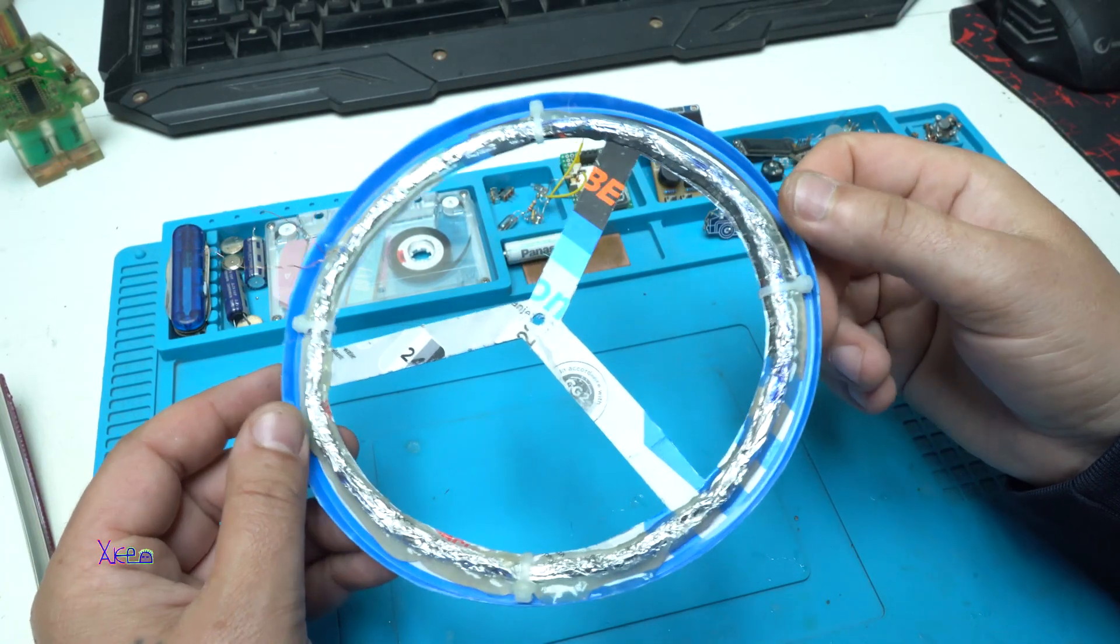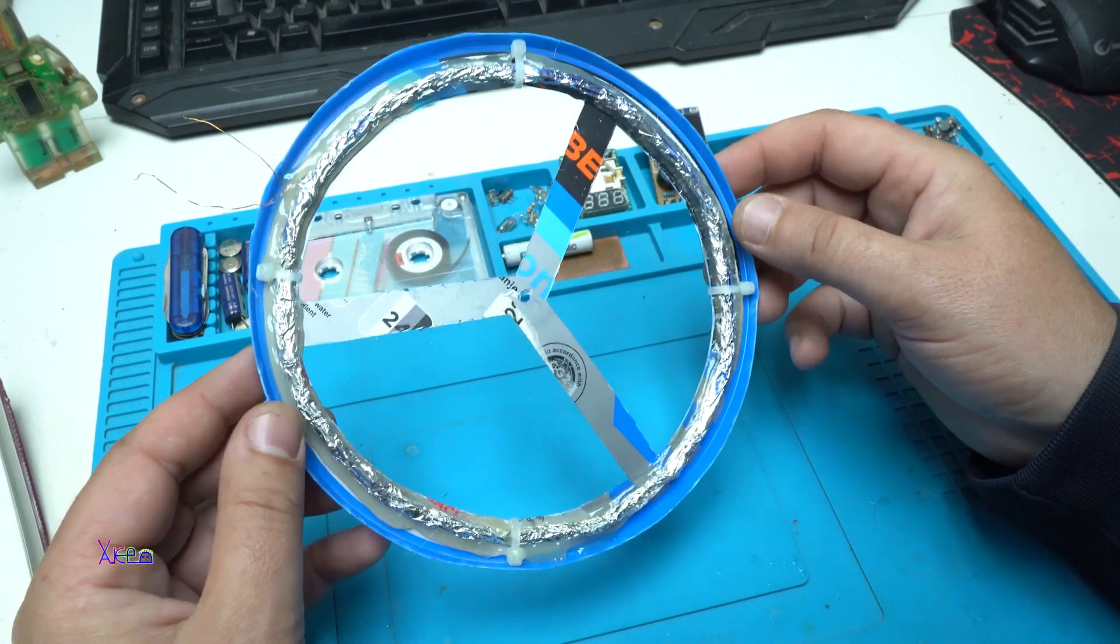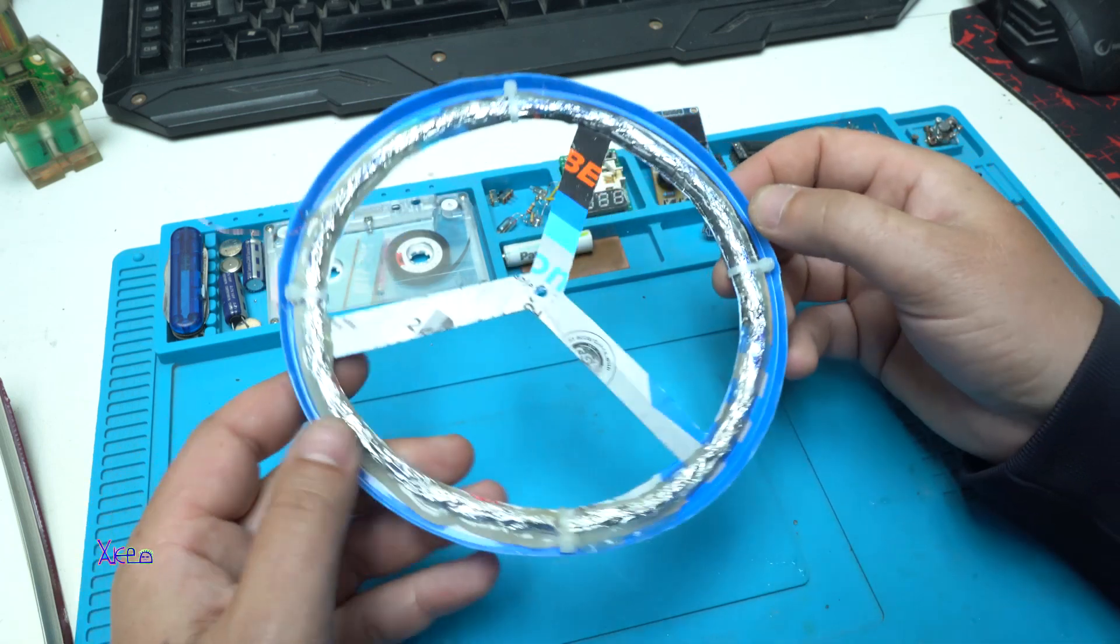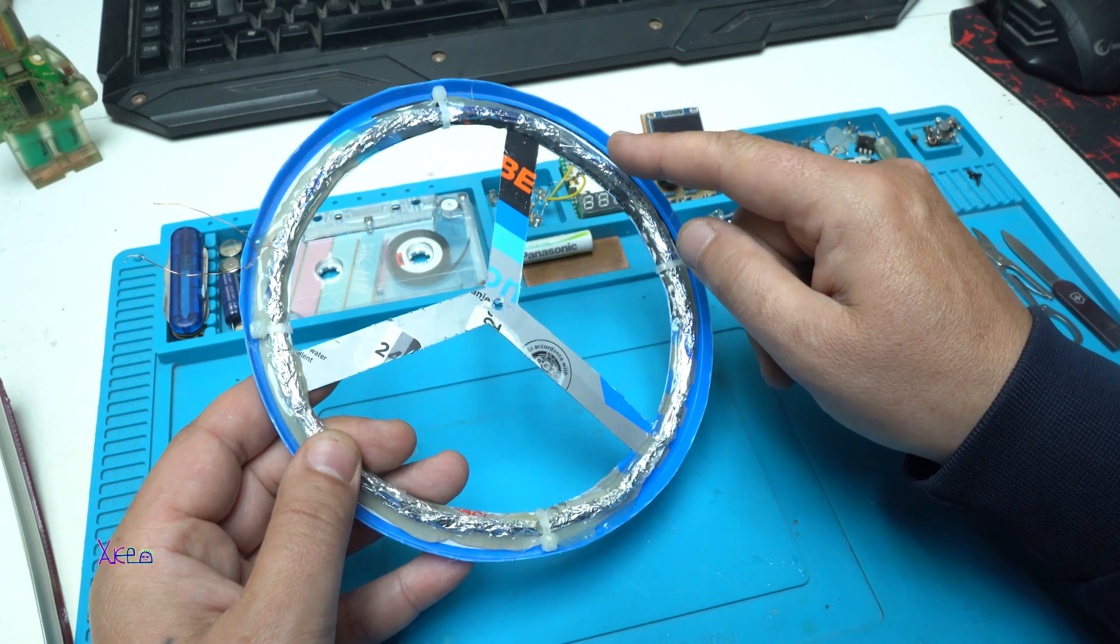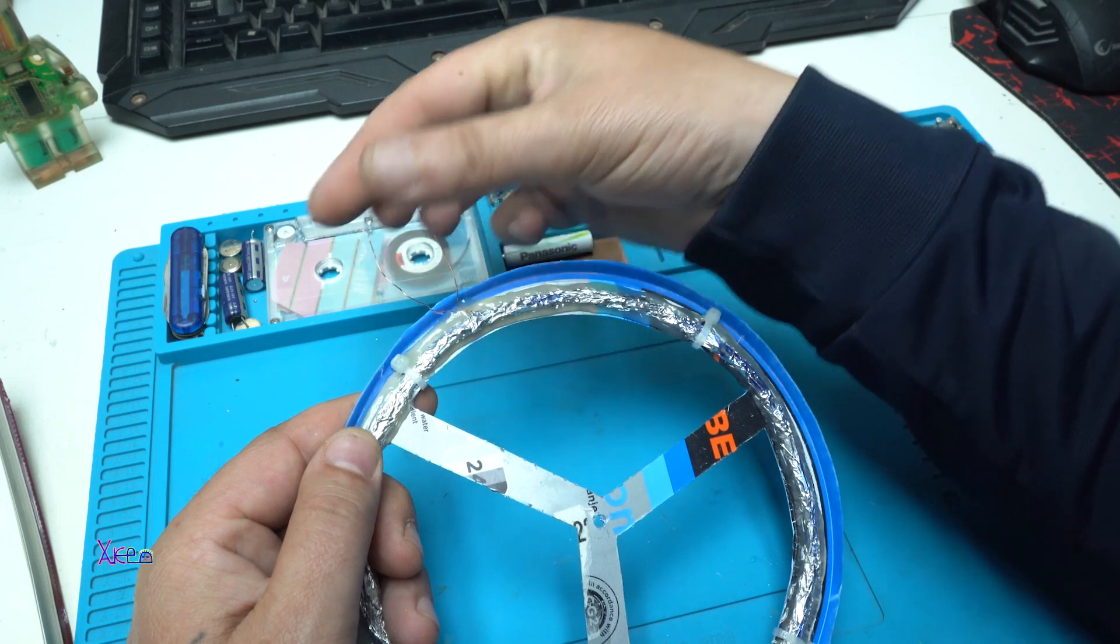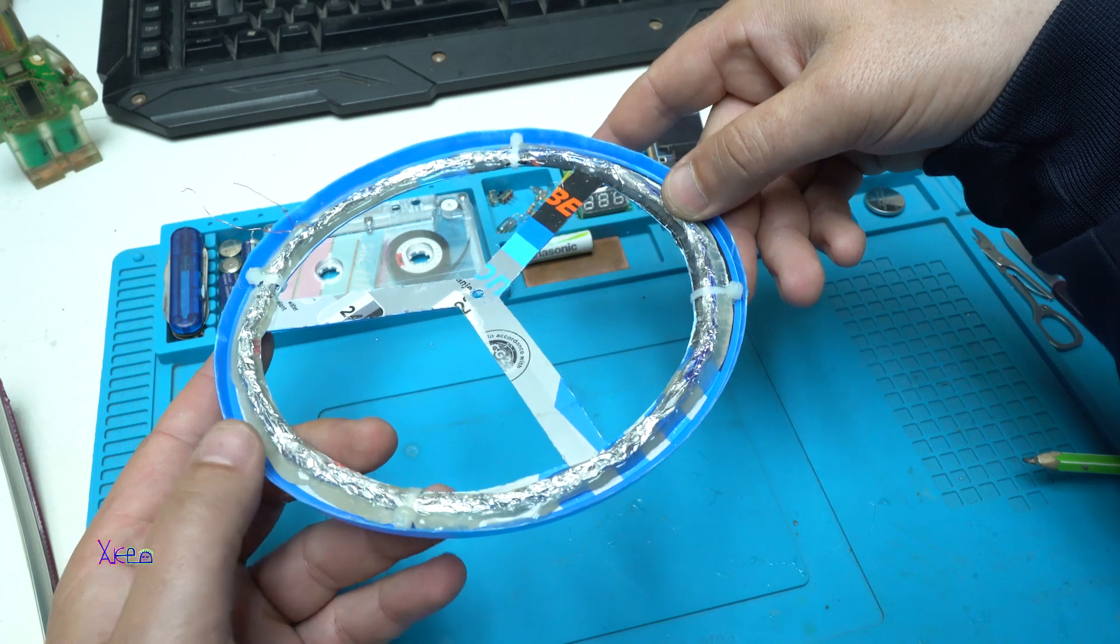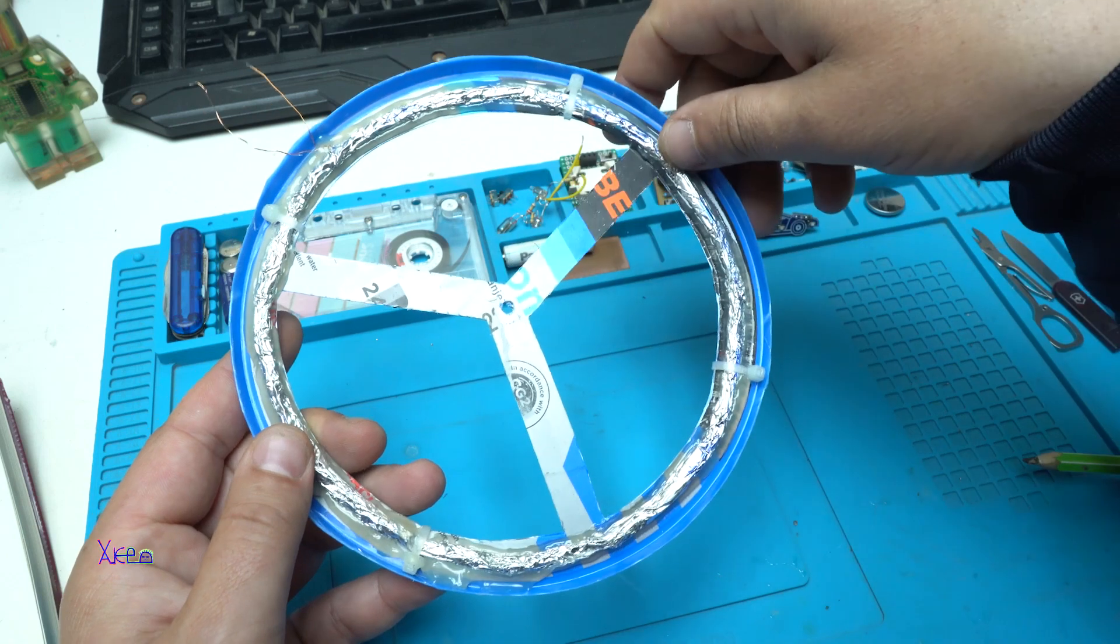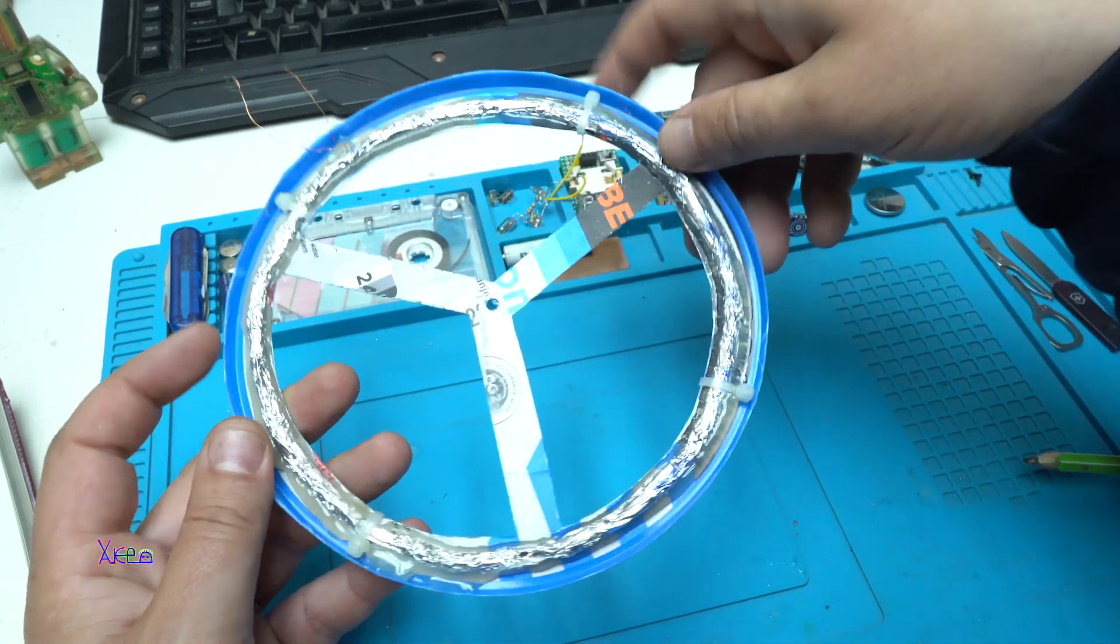I finished the first part for making the metal detector and that is making the searching coil. It turned out pretty cool. It's 150 millimeters diameter with about 30 turns of copper wire coil. You have two ends on this side and also I have put an aluminum shield on the copper coil which is good. This plastic frame is made out of lead.